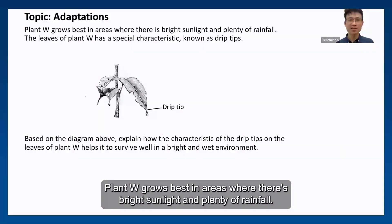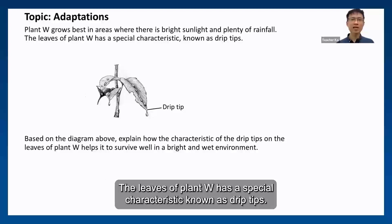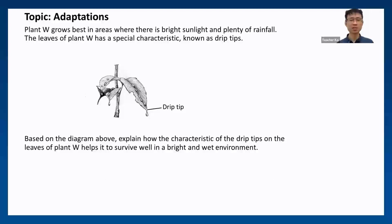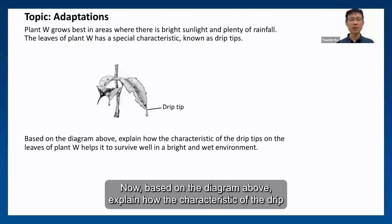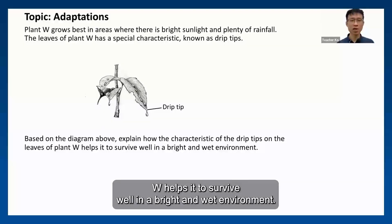Plant W grows best in areas where there's bright sunlight and plenty of rainfall. The leaves of plant W have a special characteristic known as drip tips. Based on the diagram above, explain how the characteristic of the drip tips on the leaves of plant W helps it to survive well in a bright and wet environment.